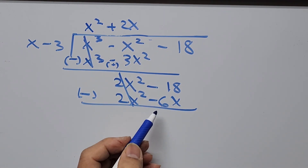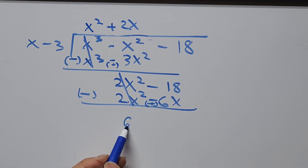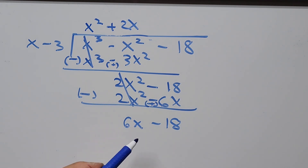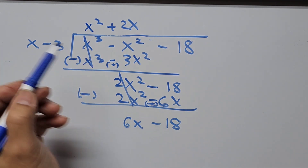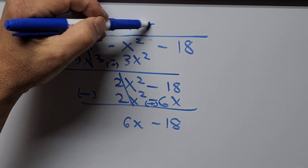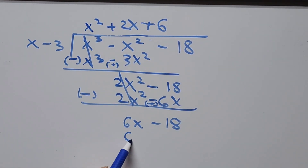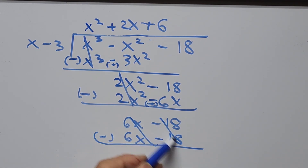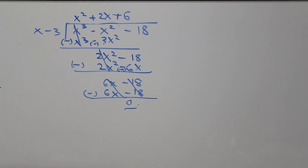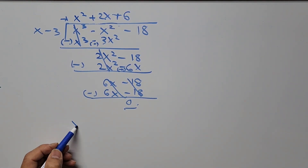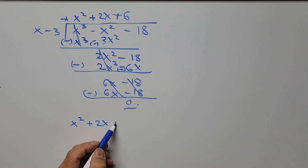After subtracting, we get 6x minus 18. Then 6x divided by x is 6; 6 times x is 6x, and 6 times negative 3 is negative 18. Subtracting gives remainder zero. So the result of the long division is the quadratic polynomial x squared plus 2x plus 6.